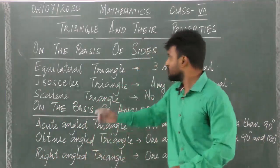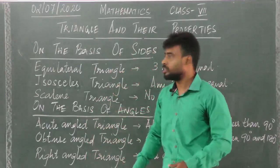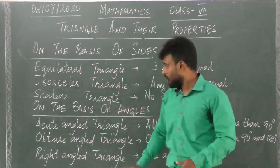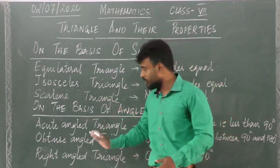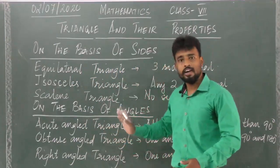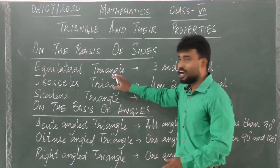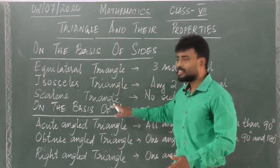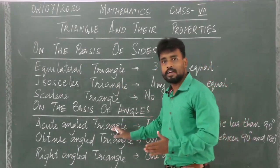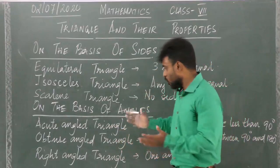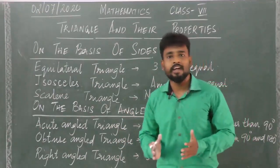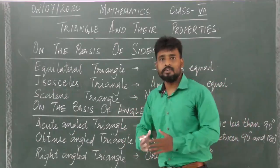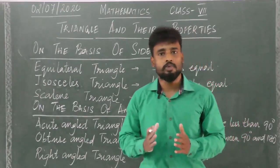So let us summarize the various types of triangles. On the basis of sides, we have equilateral triangle, isosceles triangle, and scalene triangle. On the basis of angles, we have acute angled triangle, obtuse angled triangle, and right angled triangle. Equilateral triangle: all three sides equal. Isosceles: two sides equal. Scalene: no sides equal. In an acute angled triangle, all the angles are acute. Obtuse angled triangle: one angle is obtuse, meaning between 90 and 180 degrees. And in a right angled triangle, one angle is equal to 90 degrees.